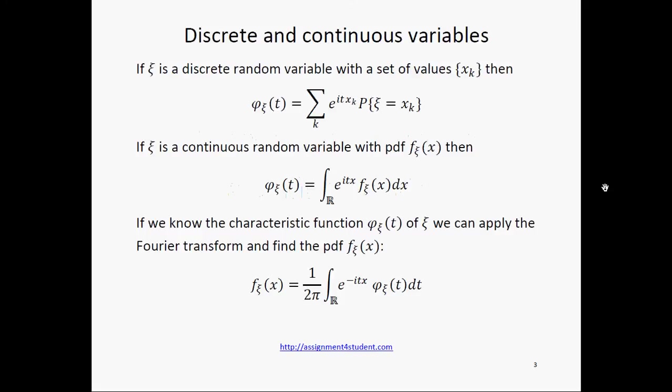Discrete and continuous variables. If xi is a discrete random variable with a set of values {xk}, then we get the following formula using the sum notation.